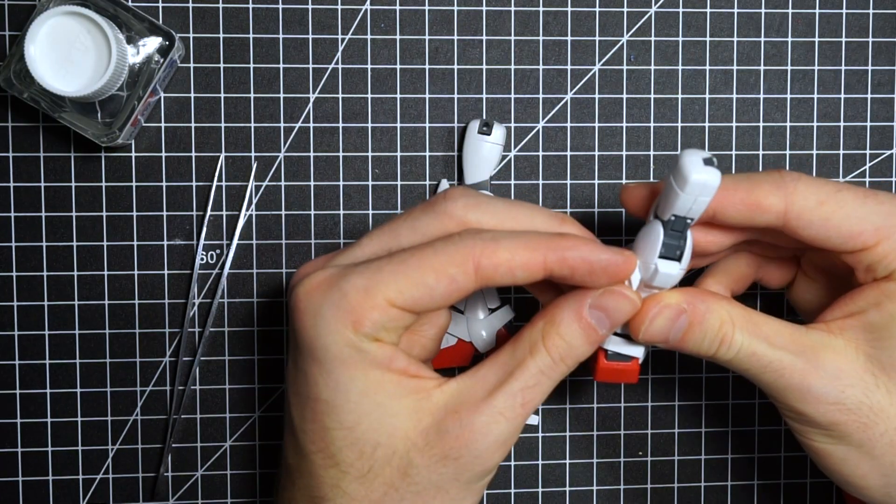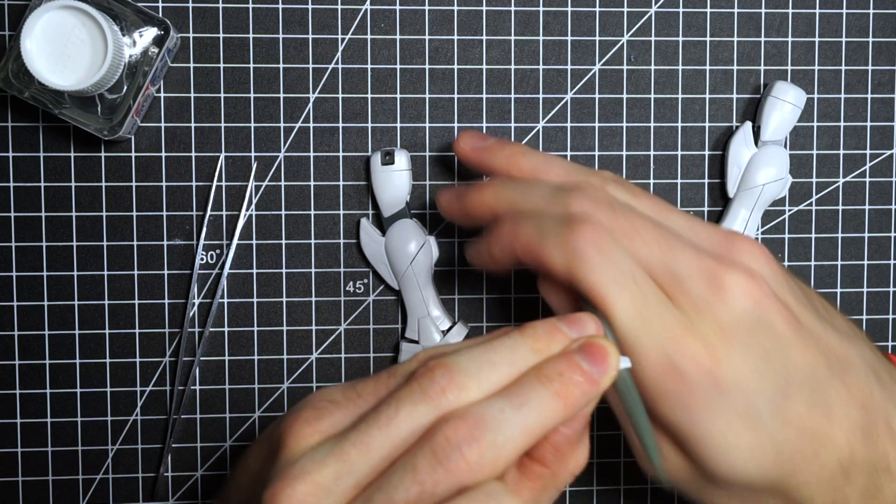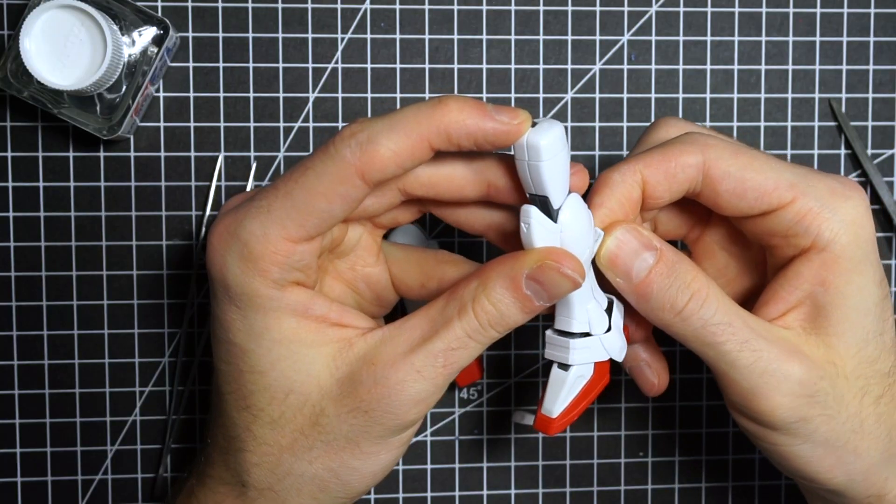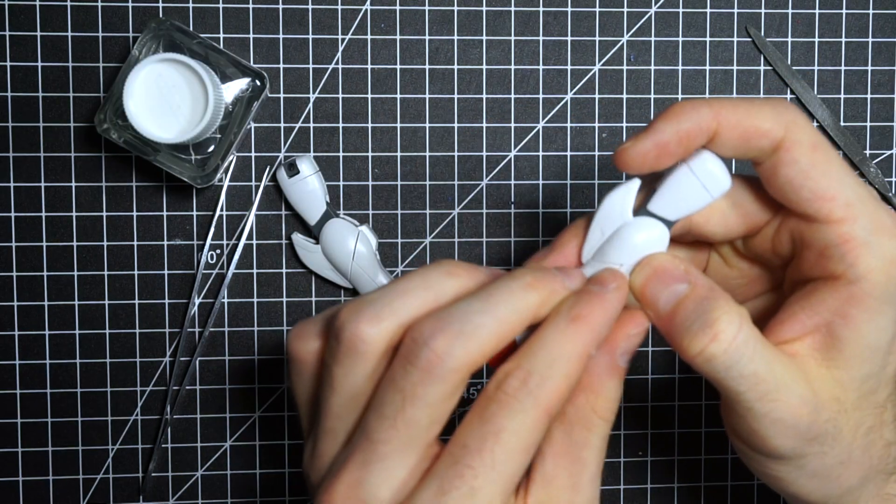As I was modifying the shoulders, I got the idea to take those exhaust vent things and attach them to the legs as a kind of bonus thruster. So I keep carving and filing a little bit at a time until it fits to that curved calf nicely.